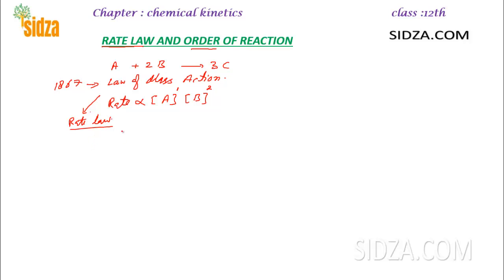According to the rate law, the rate of a reaction depends on the concentration of reactants A and B. It is directly proportional to the product of the concentration of each reactant. But the power that each term should be raised to is something which you can determine only experimentally. We can't say just by looking at the balanced chemical equation what the power should be — whether it is 1, 2, or something different. That's why we call them alpha and beta.